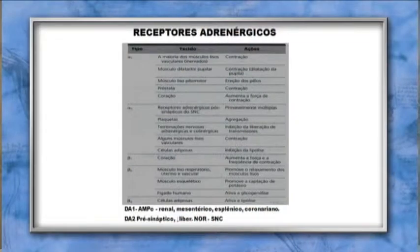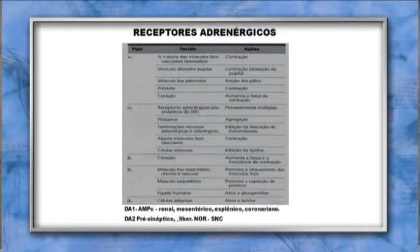As respostas dos receptores adrenérgicos variam conforme sua localização: alfa-1 gera contração e ereção dos pelos; alfa-2 causa agregação plaquetária, mecanismo de feedback e inibição da lipólise; beta-1 aumenta a força e frequência cardíaca; beta-2 produz broncodilatação; beta-3 ativa a lipólise. O dopaminérgico D1, ligado ao AMPc cíclico, está presente nos vasos renais, mesentérico, esplênico e coronariano. O dopaminérgico D2 é pré-sináptico e diminui a liberação de norepinefrina no sistema nervoso central.